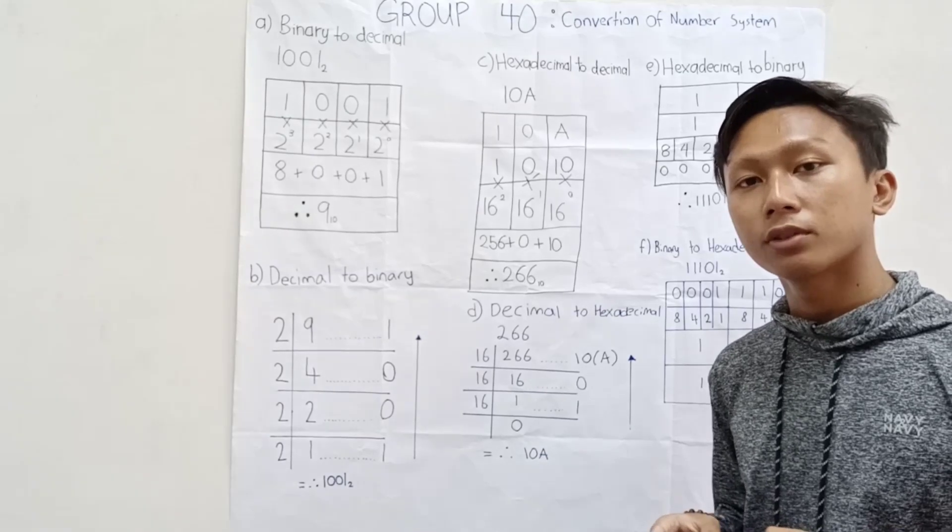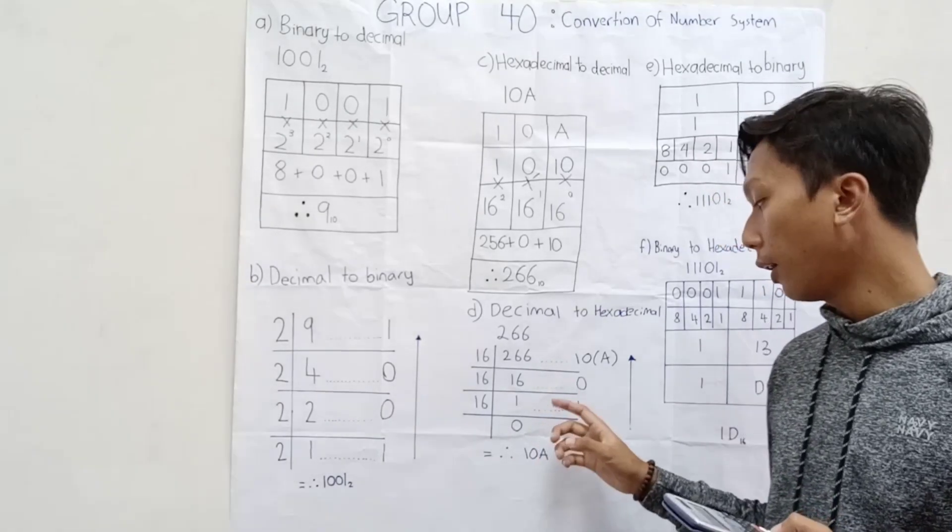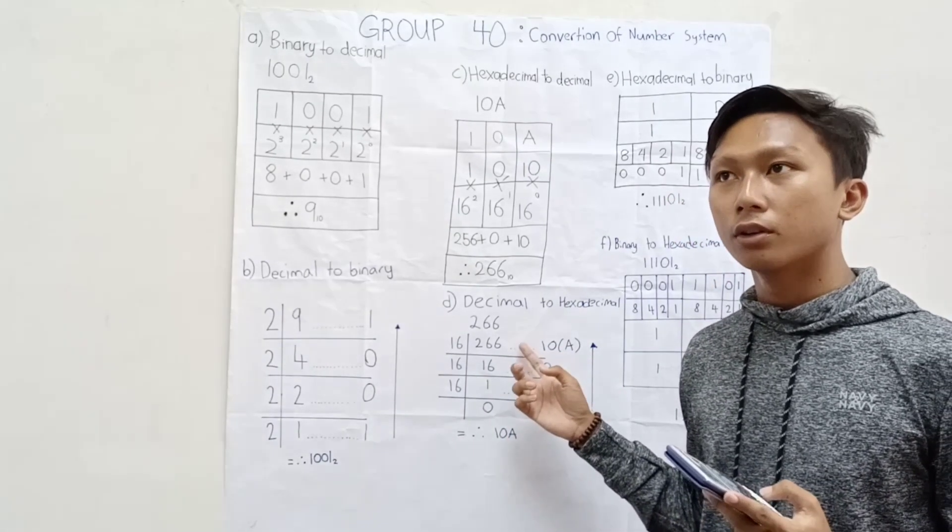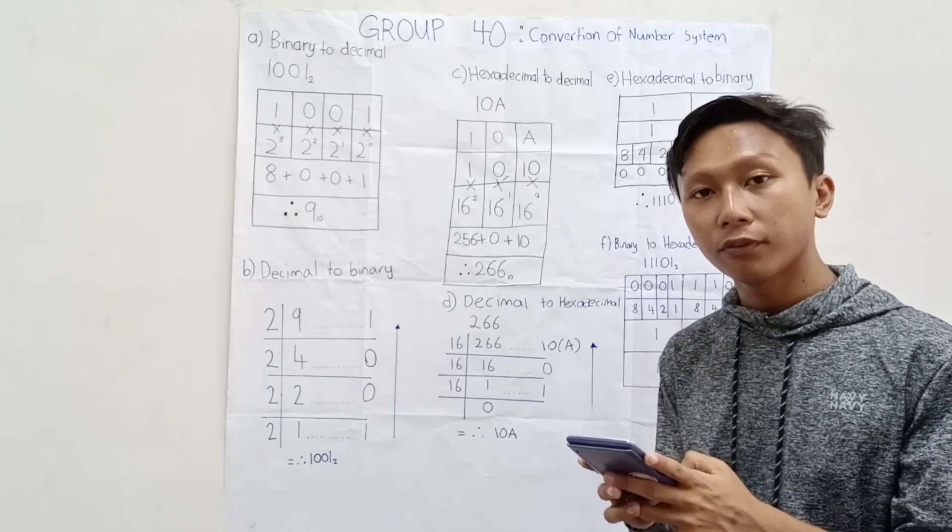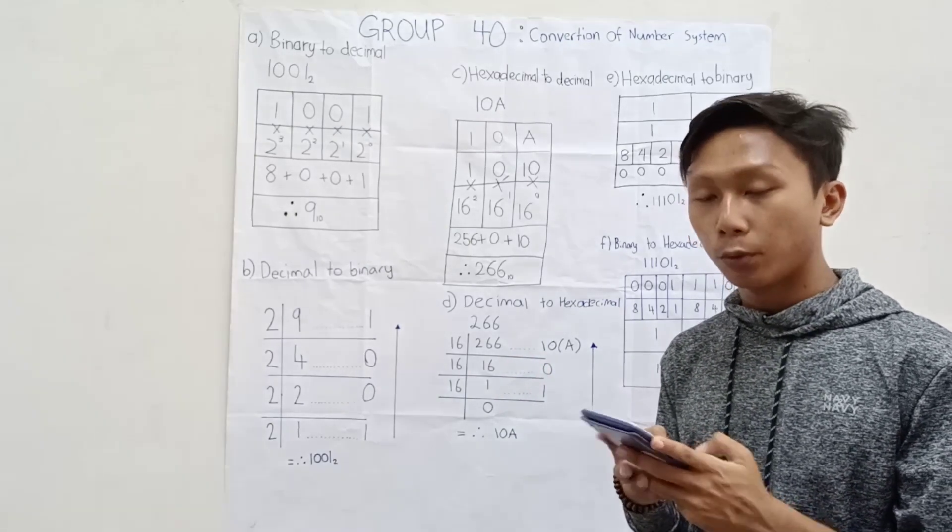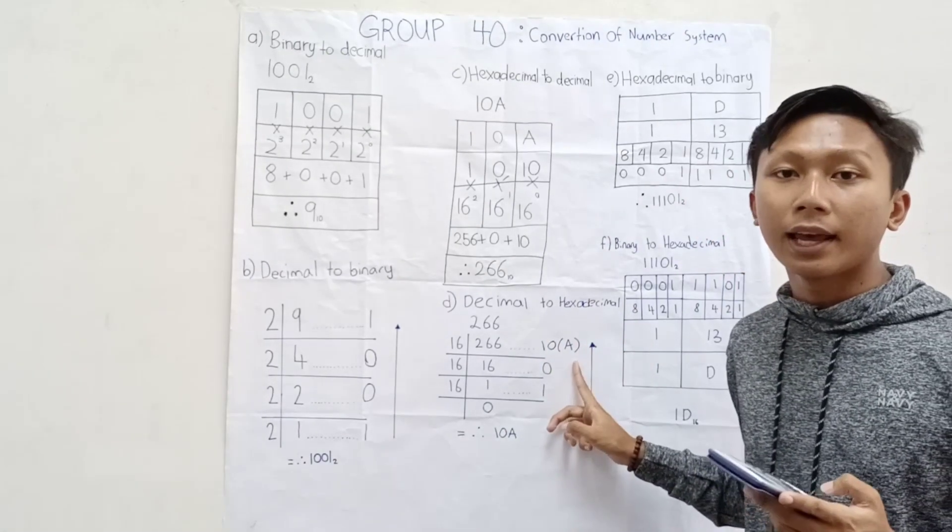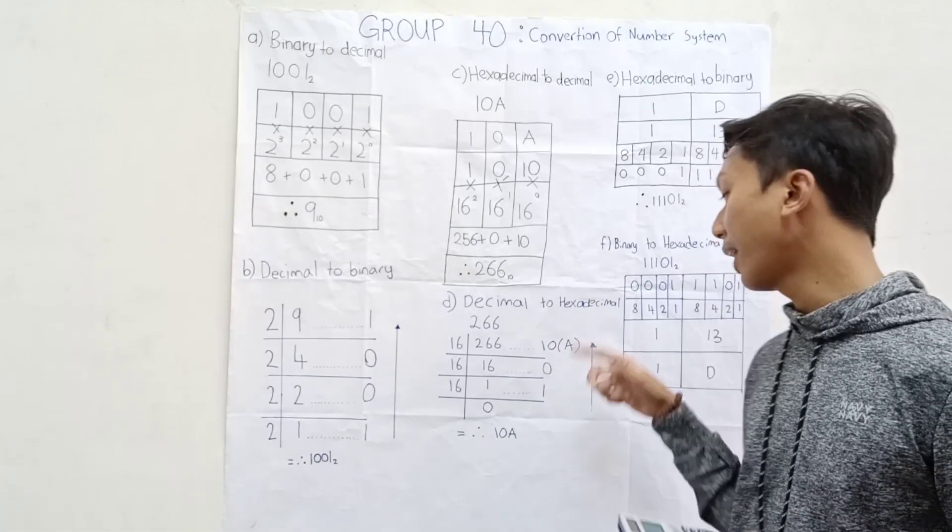We will get 16.625. Okay? If we get 16.625, we take 0.625 times 16. We will get 10. Okay? 10 in hexadecimal is A.